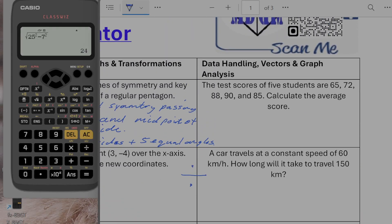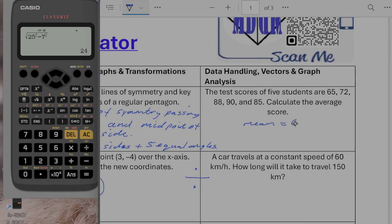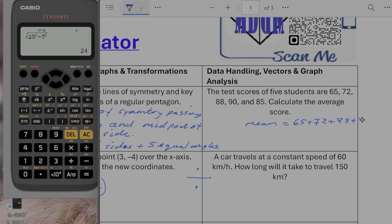Test scores for five students are 65, 72, 88, 90, and 85. Calculate the average score. So the average we're going to go for the mean average is going to be equal to the sum of these. So 65 plus 72 plus 88 plus 90 plus 85 divided by 5. 65 plus 72 plus 88 plus 90 plus 85 going to give us a total 400 divided by 5 it's going to give us 80.